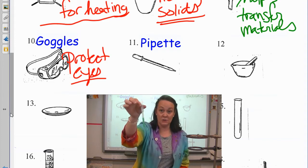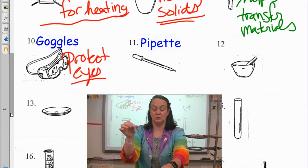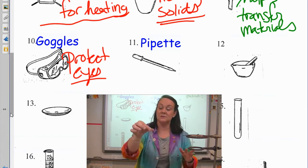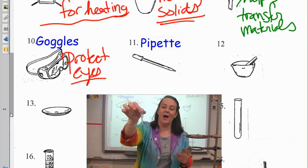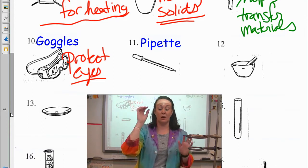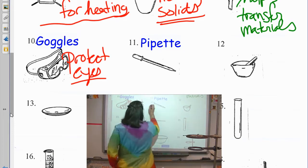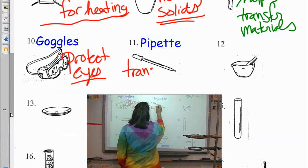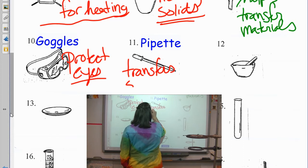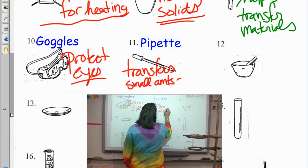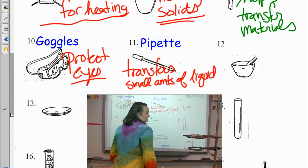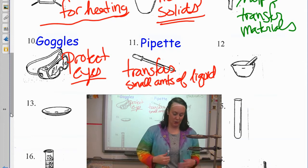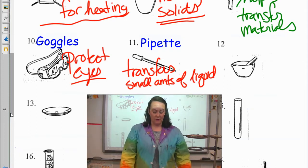And what a pipette does is it just transfers small amounts of liquid. There is no way to measure with this. We do not measure with... We only measure with certain things. But you can't be like, oh, it's two eyedroppers full. We need to be more quantitative than that. So, it transfers small amounts of liquids. Transfers small volumes, if you will, of liquids.